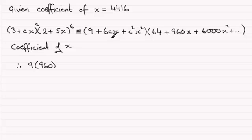Then we'd go on to 6cx multiplied by all of these terms in the bracket here, but the coefficient of x, the one that's going to give us an x-term, is just going to be 6cx times the 64. So we've got plus 6c times 64. We won't have any more x-terms because when we multiply this term with any of these, we're going to get terms of x², x³, x⁴ and so on. So there's our coefficient of x.